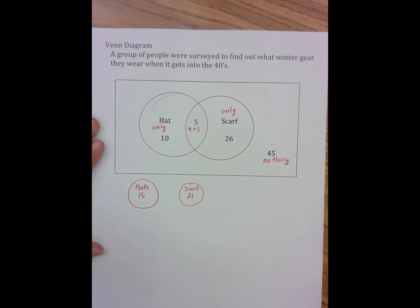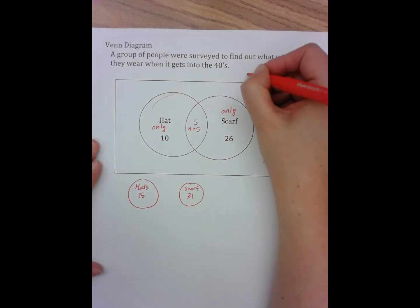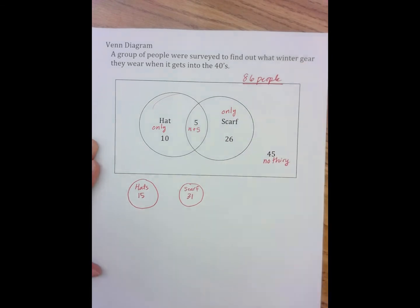Let's look at some of the information here. I think the first thing we need to do is we need to actually say that 86 people were surveyed. That's how many people were asked.